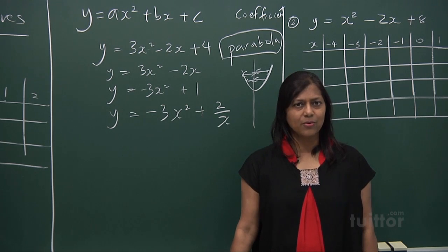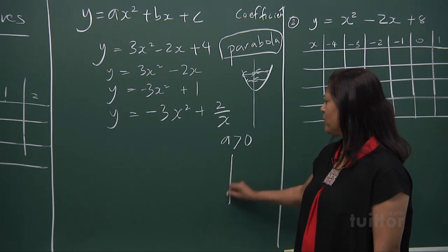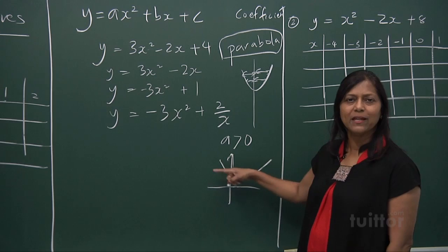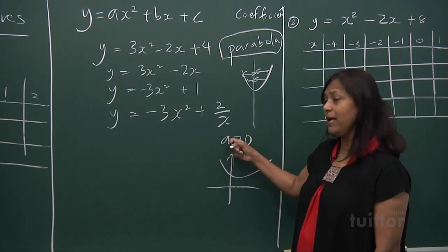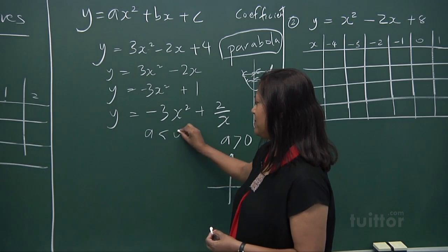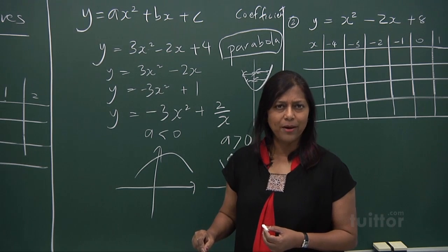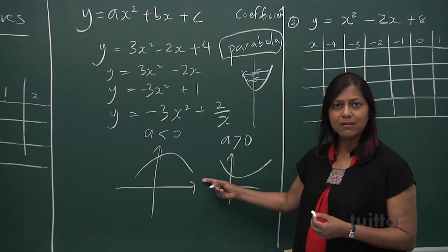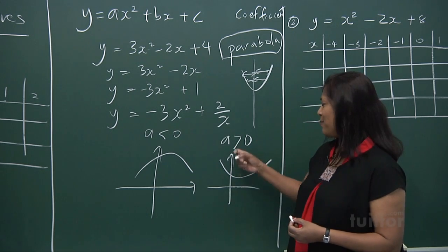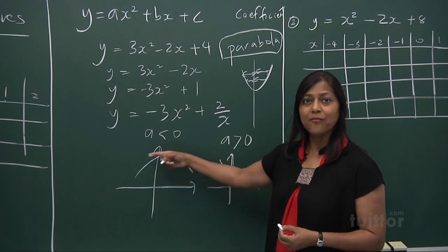What happens if a is greater than zero, and if a is less than zero? If a is greater than zero, your curve looks like a smile — we can call it a valley. But if a is less than zero, the shape of your graph will be a mountain or a frown. So when a is positive, it's a smile, a valley; when it's negative, it is a frown, a mountain.